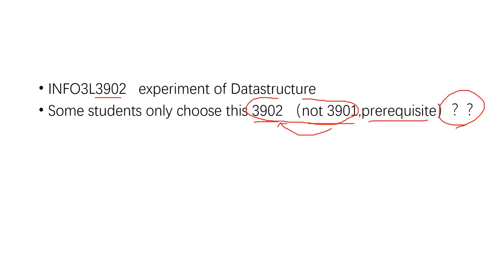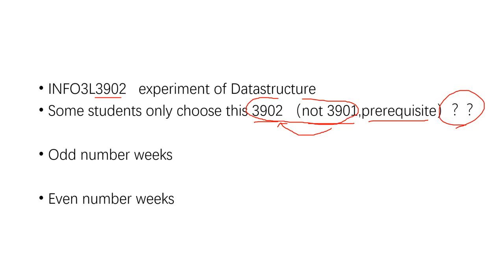In my teaching system I have seen one or two students where the number enrolled in course 3902 was larger than in the theory course. For Chinese students they should know both are required, but I'm not sure what the rules are for foreign students, so try to make sure about that.